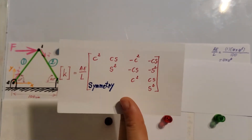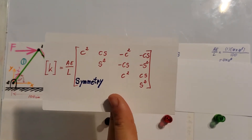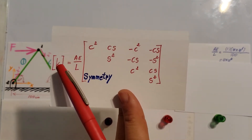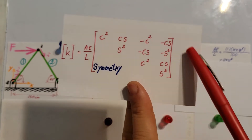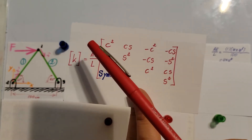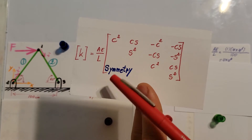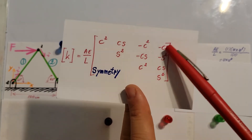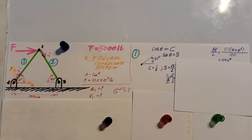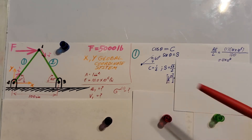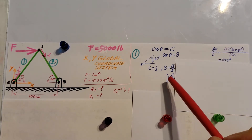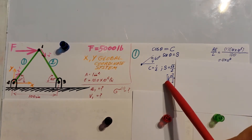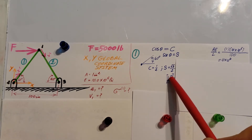Here is the formula for the local stiffness matrix: AE over L multiplied by a matrix of sines and cosines, which is symmetric about its lower half. First, I'll calculate AE over L — that's 10 times 10 to the fourth — so I don't have to write it repeatedly. Then we expand the local stiffness matrix k for element 1.